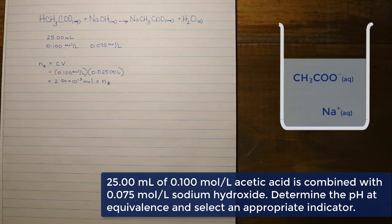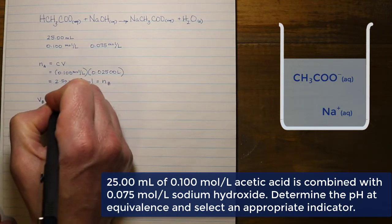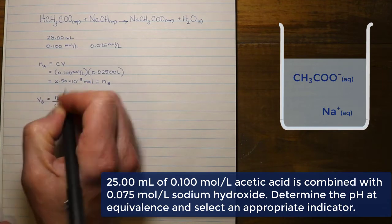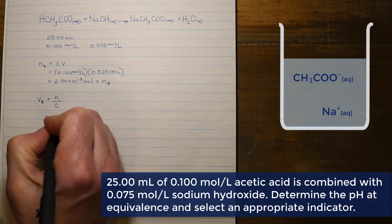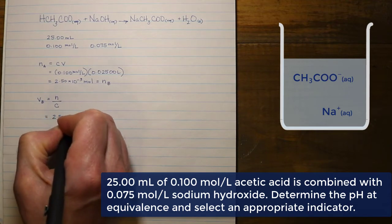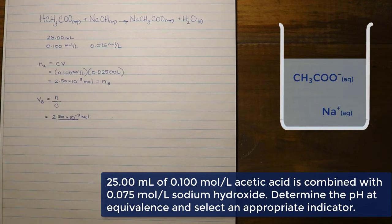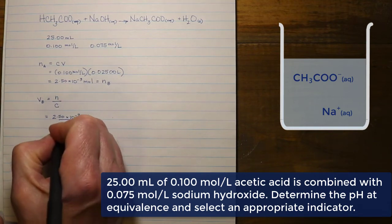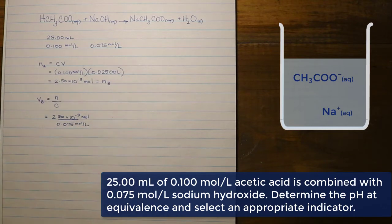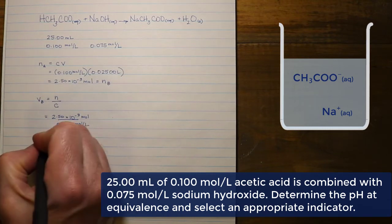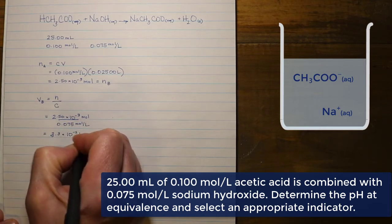This allows us to figure out what volume of base was needed to neutralize the acid. We take the number of moles of the base, 2.5 × 10⁻³ moles — the same as the number of moles of the acid — and divide by the concentration of the base, arriving at a volume of 3.3 × 10⁻² liters.